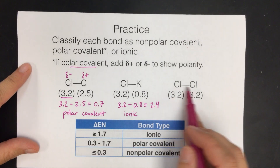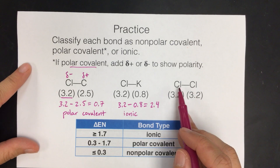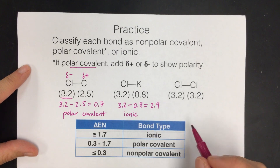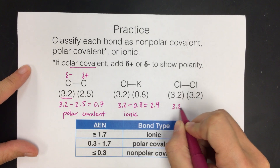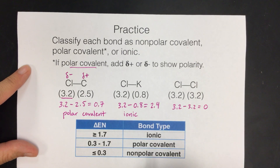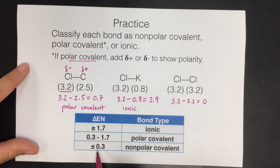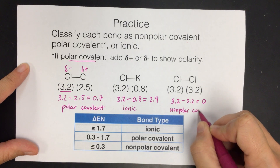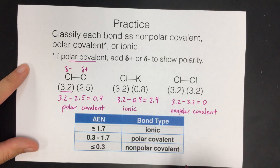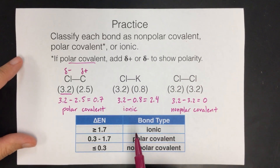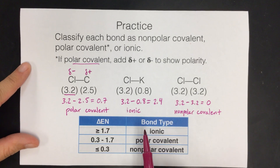For ionic, we don't write partial charges. What happens is chlorine takes the electron and develops a negative charge, while potassium has a positive charge — full charges, not partial. The last one is chlorine bonded to chlorine, so it's the most even match-up: 3.2 and 3.2. The electronegativity difference is 0, which is less than 0.3, so this is a non-polar covalent bond — the sharing is equal.